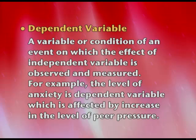Dependent variable is a variable or condition of an event on which the effect of the IV is observed and measured. For example, the level of anxiety is the dependent variable, which is affected by an increase in the level of peer pressure. So peer pressure is the cause and anxiety is the effect. IV is the cause, which comes first and is manipulated by the researcher. The impact which is measured is the DV, which is the effect.